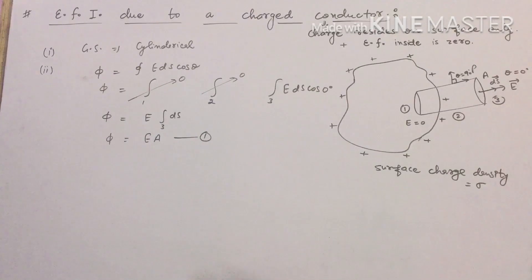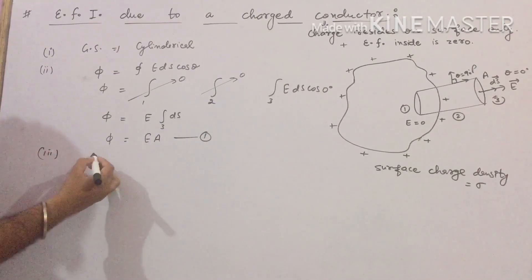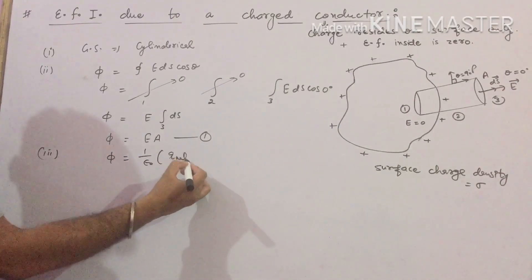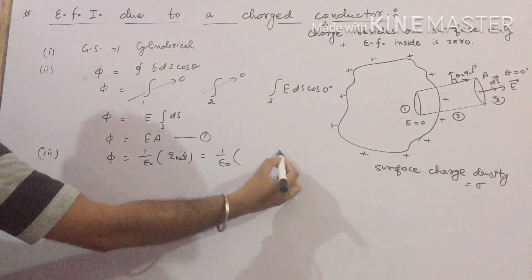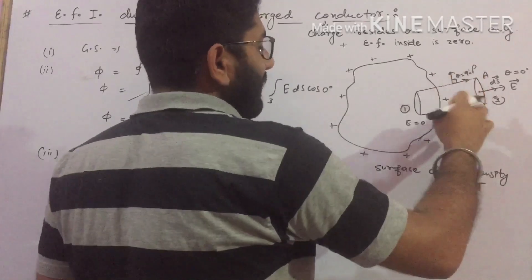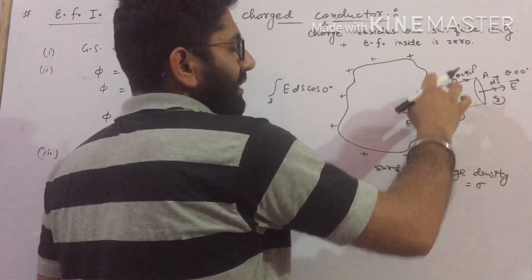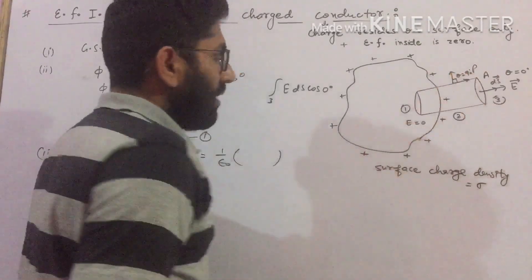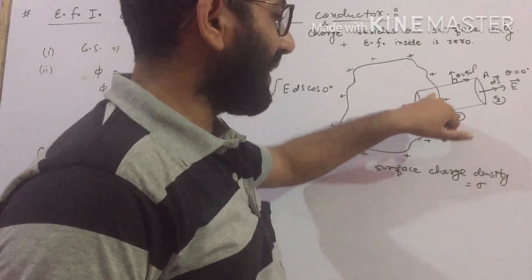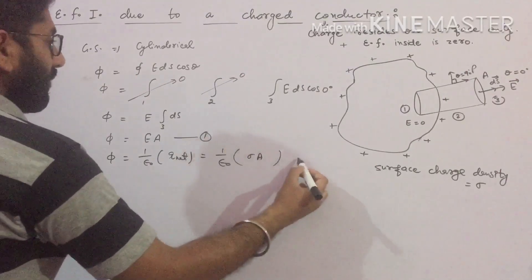Next, we find the flux using Gauss's law: flux equals Q_net divided by epsilon-naught. The area of the conductor surface lying inside the Gaussian surface is A, and the surface charge density is sigma, so the total charge inside the Gaussian surface is sigma·A. This gives us equation two: flux = sigma·A / epsilon-naught.